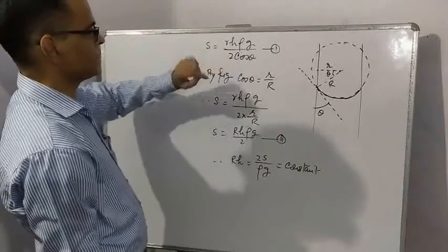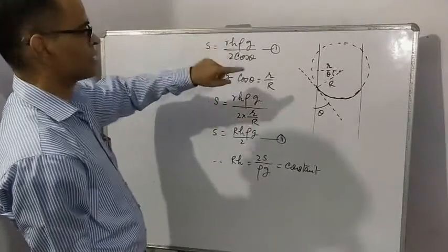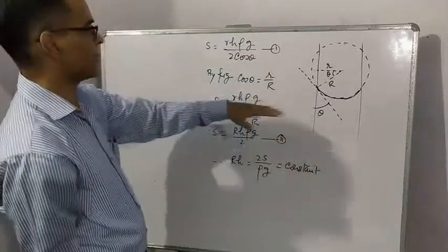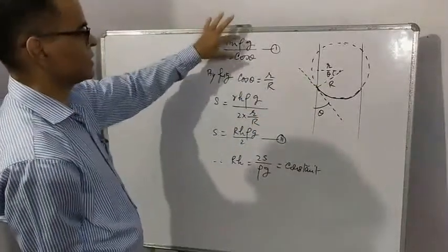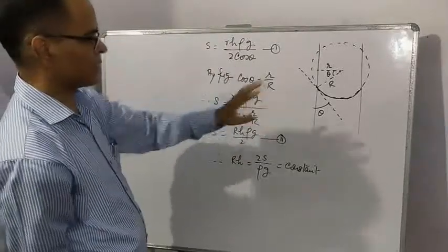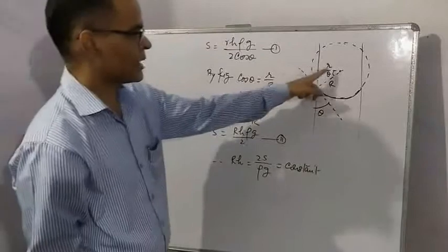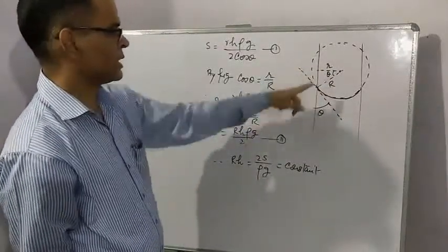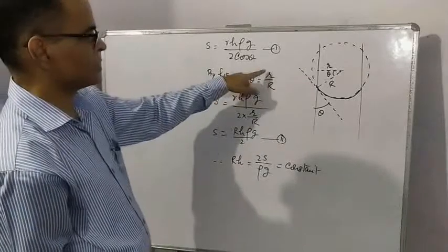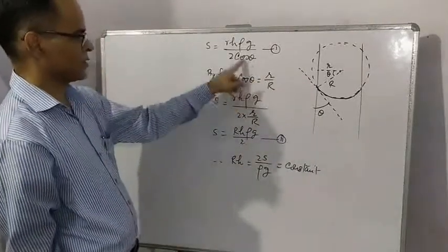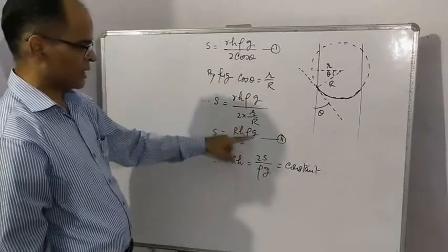The formula is S equals rh ρg upon 2 cos theta, where r is radius of tube, h is height of liquid in capillary tube, ρ is density, g is acceleration due to gravity, and theta is angle of contact. Now in this triangle you can write cos theta equals small r by capital R. Transfer this value here and you get the final equation.